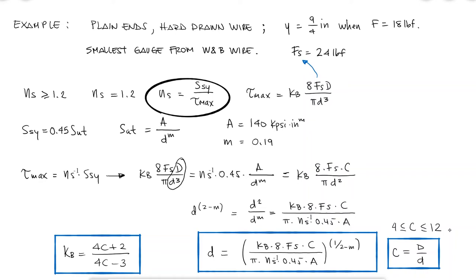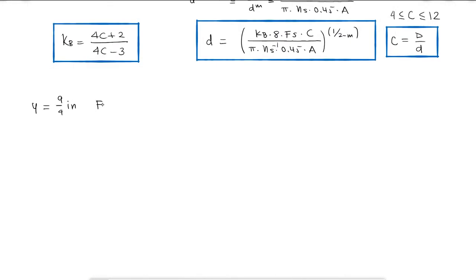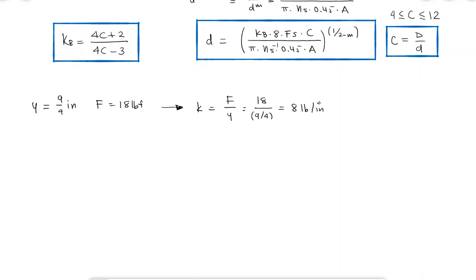But before doing all of those calculations, I know that my spring needs to compress down to 9 fourths of an inch when it's subjected to an 18 pound force. This means that the spring rate or spring constant k is equal to 8 pounds per inch. And I know that the spring rate is a function of the number of coils, which is of course another parameter that I need to define as part of the spring design. By replacing capital D over lowercase d as the spring index c, I can find an expression for the number of active coils.